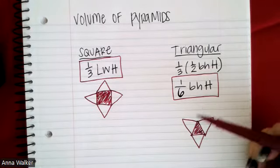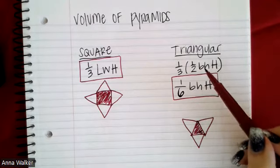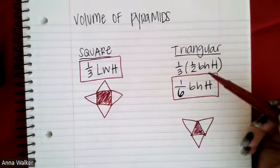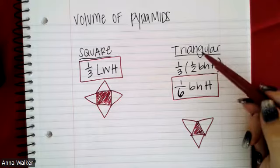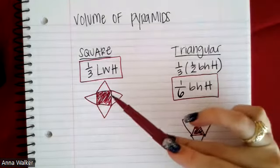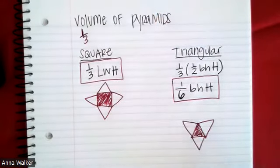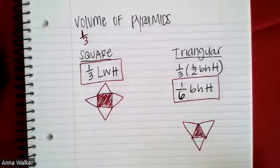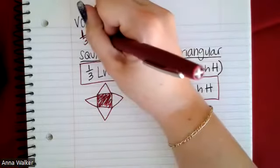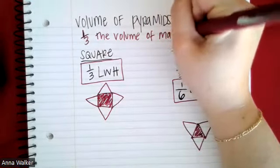If we take one third of all of that, that simplifies to this formula here. One third times one half is one sixth, so one sixth times the base times the height of the triangle, and then times the height of the pyramid is equivalent to the volume of the triangular pyramid. So what you'll notice is if we take one third the volume of their matching base shape prism. For example, if we take one third the volume of a triangular prism, we're going to find the volume of a triangular pyramid, and then kind of the same thing but with a square. So I'm just going to write that as a note: one third the volume of matching prism.